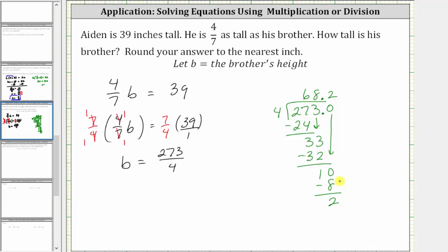But we can go ahead and stop here because now we can see, because there's a two in the tenths place value, we round down to 68. So the brother's height is approximately 68 inches.